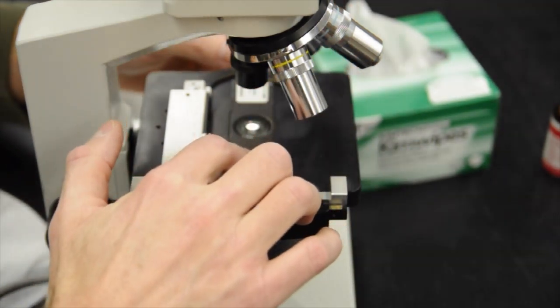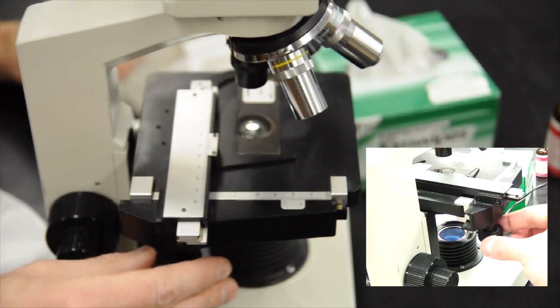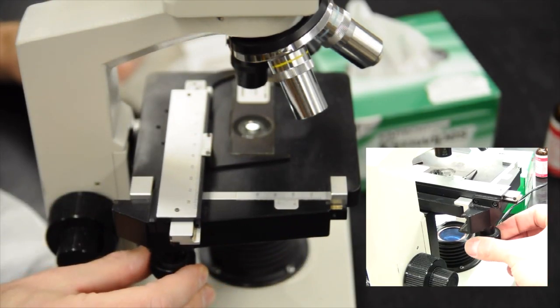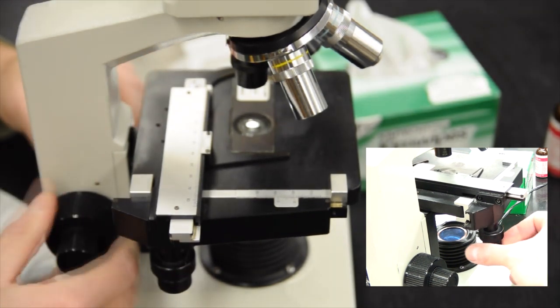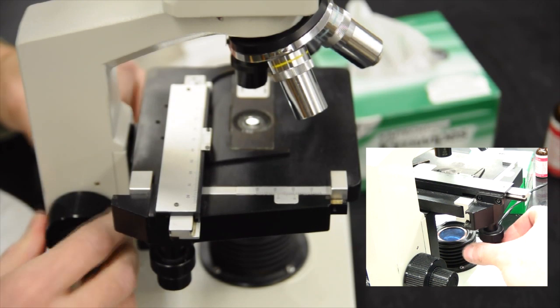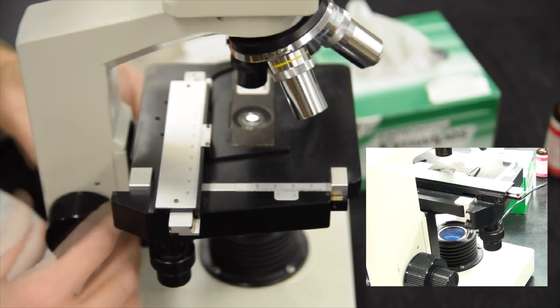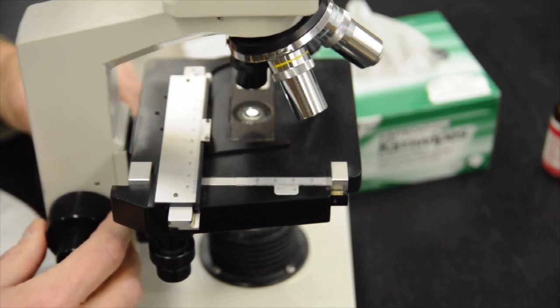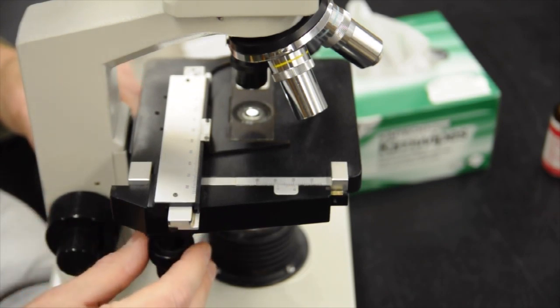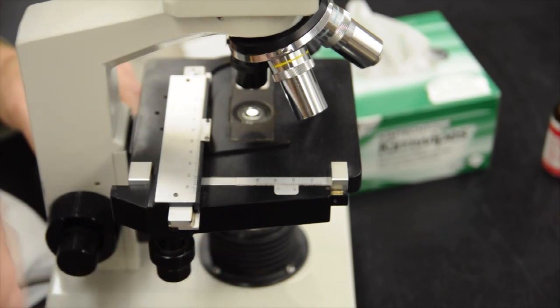Put the slide into the mechanical stage. Make sure it's on the edge and that the clamp is closed. Now you've got the ability to move it. The top knob will do it in the Y position and the bottom knob in the X position. Then with your coarse knob adjustment on the lowest objective, move it up into focus. It's always a good idea to move it around just to make sure you're in the right focal plane.